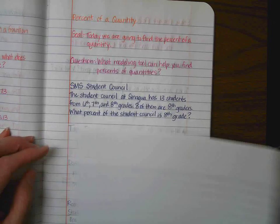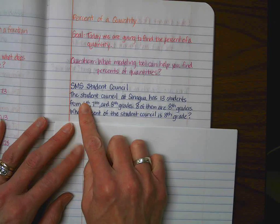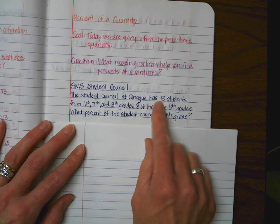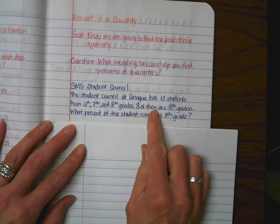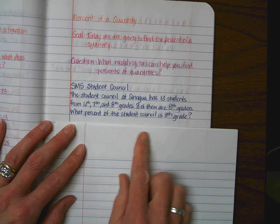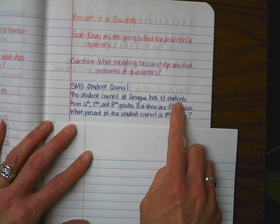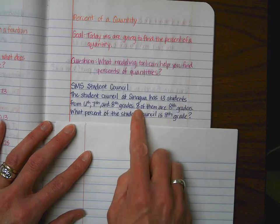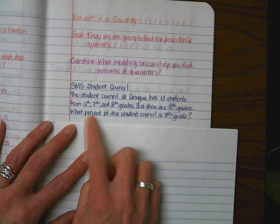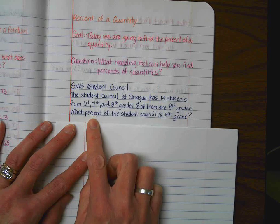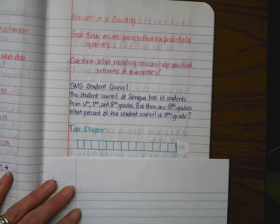So, how many total students are there? What we need to do is figure out some information about this. Let's do a second read looking for quantities. The Student Council at Sonawa has 13 students from 6th, 7th, and 8th grades. Eight of them are 8th graders. What percent of the Student Council is 8th grade? So, 13 students would be a quantity, eight of them is a quantity, and then we have to figure out what percent is 8th grade. How many total students are there? If you said 13, you are correct.